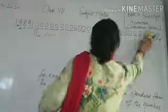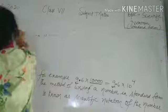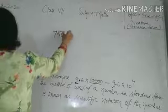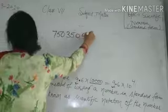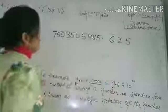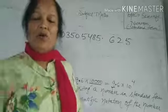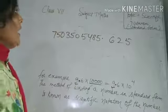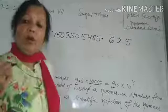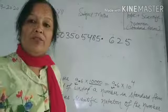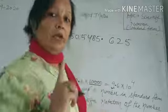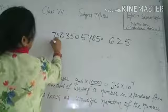Let us take one more example. The number is 750,350,548.625. I am going to write it in standard form, also called scientific notation. Before writing, we note that there should be only one digit before the decimal point.